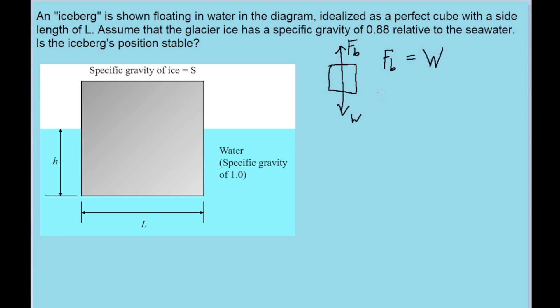Now the buoyant force is equal to the weight of the displaced fluid. So that'd be mg. In the case of the displaced fluid, that is going to be equal to the density of the fluid, which we're assuming is the density of water with a specific gravity of one, times g, times the volume of the displaced fluid. The displaced fluid is only the part that's submerged.